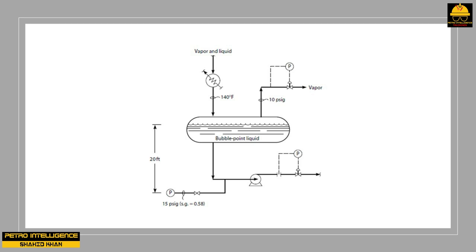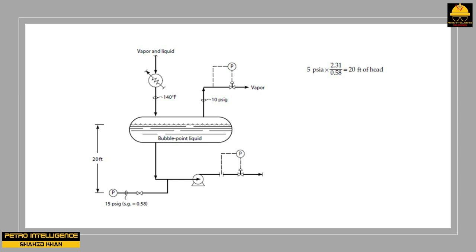The physical pressure at the suction of the pump is measured at 29.7 PSIA — 15 PSIG plus 14.7 PSIA of atmospheric pressure. The physical pressure at the suction of the pump, 29.7 PSIA, minus the vapor pressure of the liquid, 24.7 PSIA, equals 5 PSIA. To convert to feet: 5 PSIA times 2.31 divided by 0.58 specific gravity equals 20 feet of head.